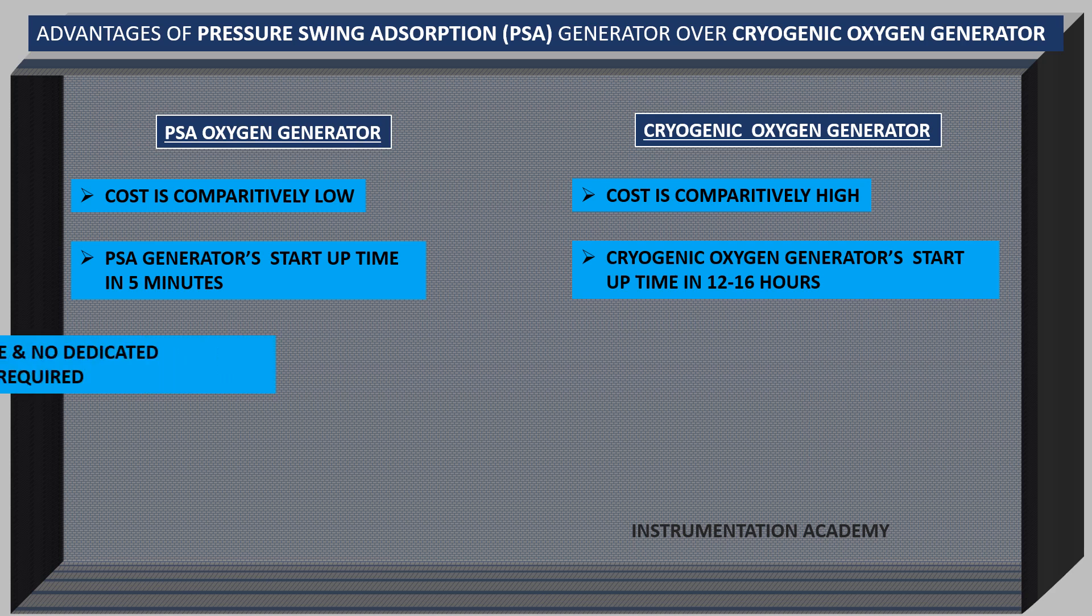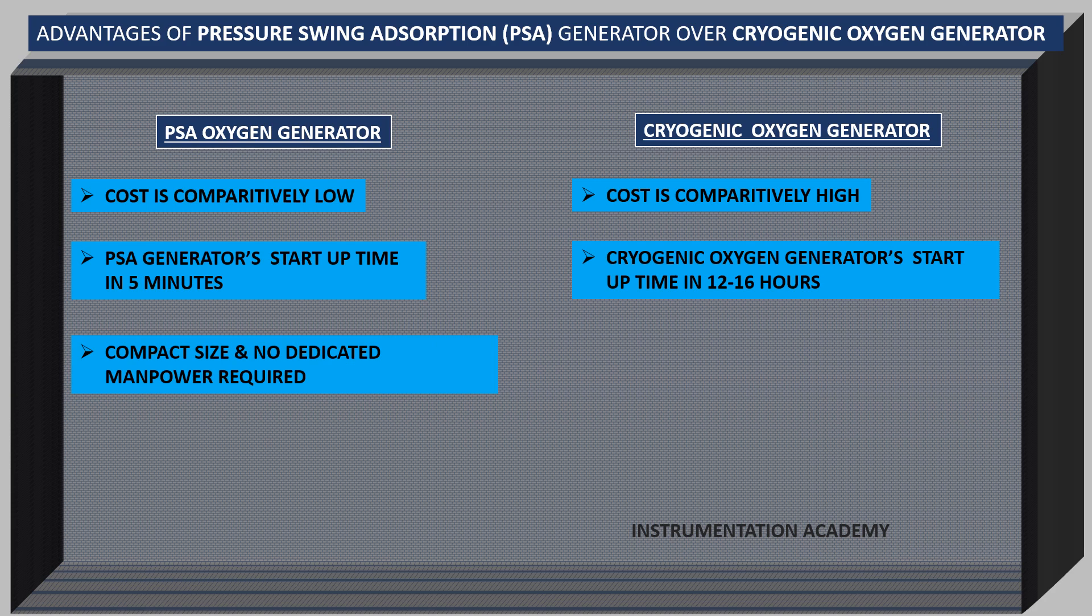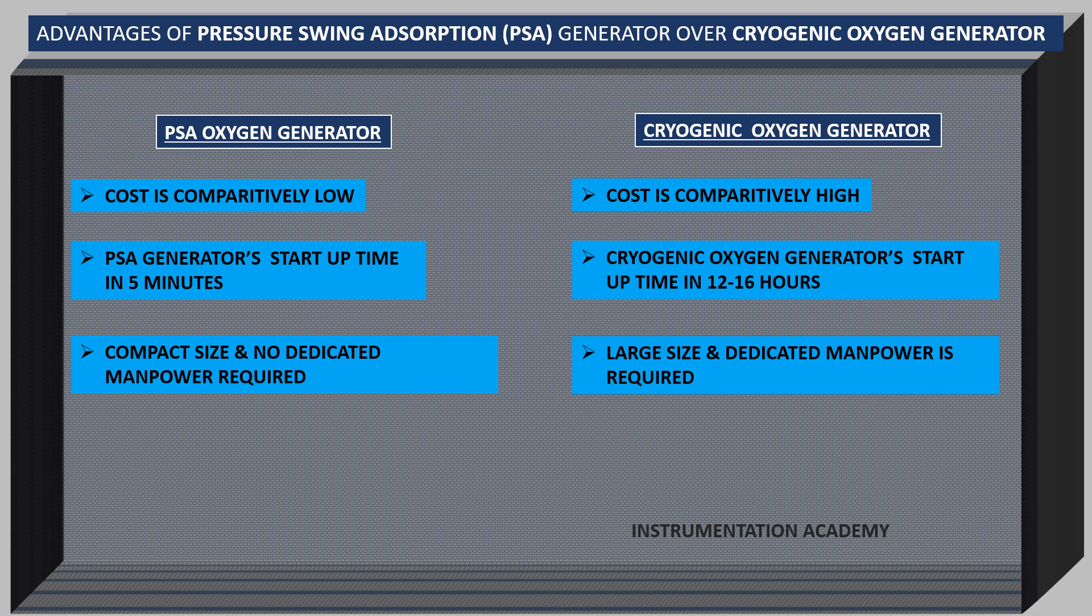PSA oxygen generator is very compact size unit and does not need a dedicated manpower. It keeps working round the clock without any supervision. While a cryogenic oxygen plant is very large equipment requiring lot of sophisticated controls and the maintenance cost is also high. So dedicated manpower is needed to monitor the operation of cryogenic oxygen plant.